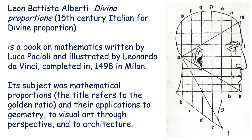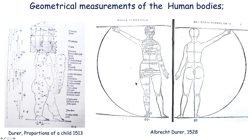Leon Battista Alberti, still in the 15th century — in the Divina Proportione, a book on mathematics written by Luca Pacioli, illustrated by Leonardo da Vinci, completed in 1498 in Milan — his subject was mathematical proportions referring to the golden ratio and its application to geometry, the visual arts through perspective, and to architecture. You can see that geometry became increasingly important.